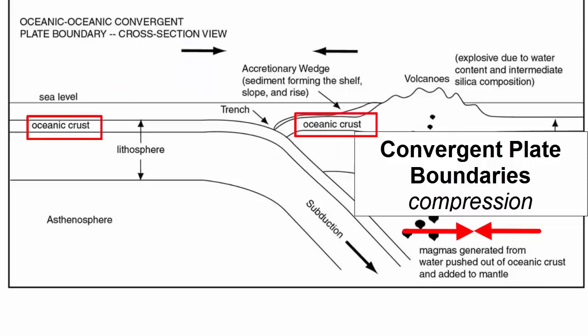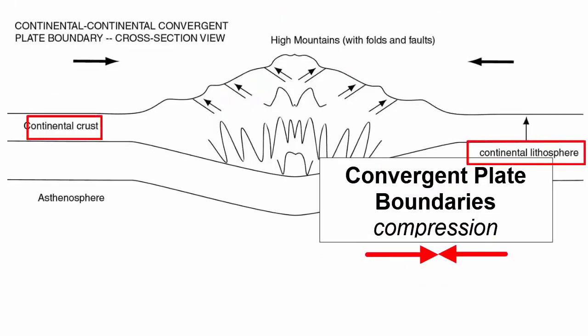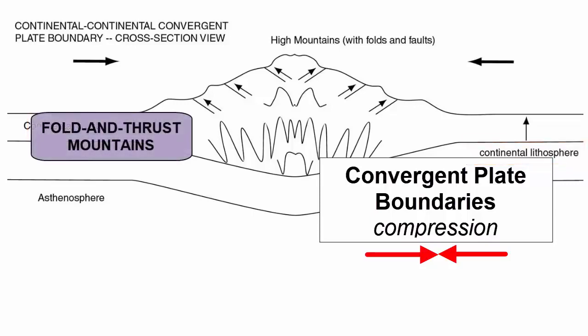When the leading edge of both converging plates consist of oceanic crust, the densest one will subduct and accretionary fold and thrust mountains will form just like in the previous subduction zone example. The main difference is that oceanic crust is on average one tenth the thickness of continental crust, so these fold and thrust mountains will not be as thick. When both converging plates consist of continental crust, neither subducts as they are both too low in density, resulting in some of the highest elevation land in the world as thick continental crust is thickened even further.